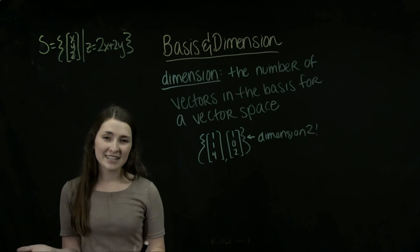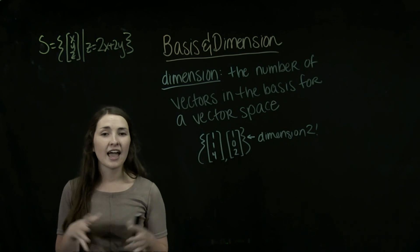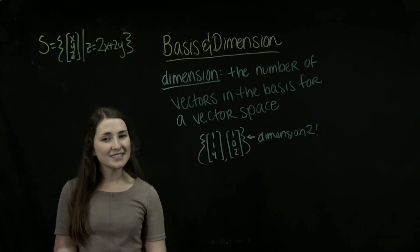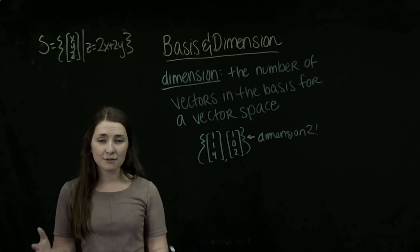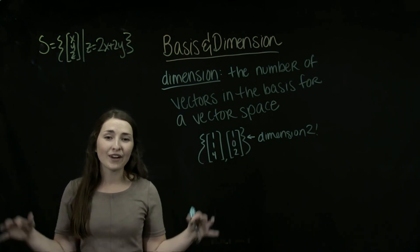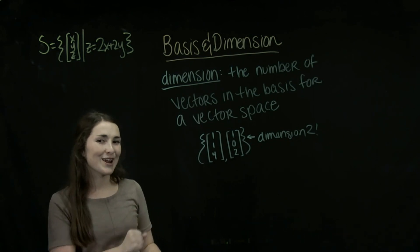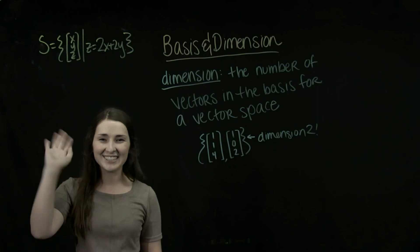So we have looked today at basis and dimension. These are two very important topics in the marriage of span and linear independence. And together, they help us define a vector space and the subspaces of vector spaces. So these are super important, super groovy, and something so awesome to know. So you learned something really cool today. Have a great day.